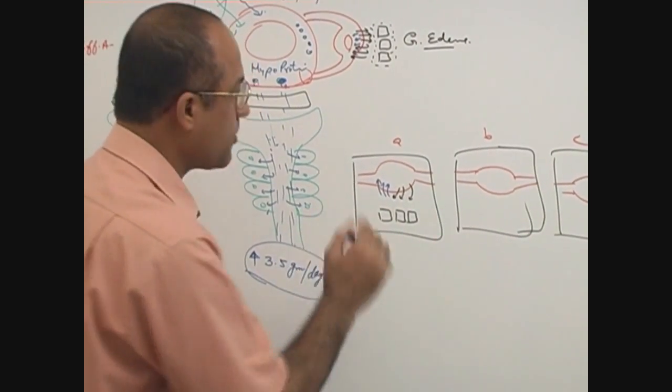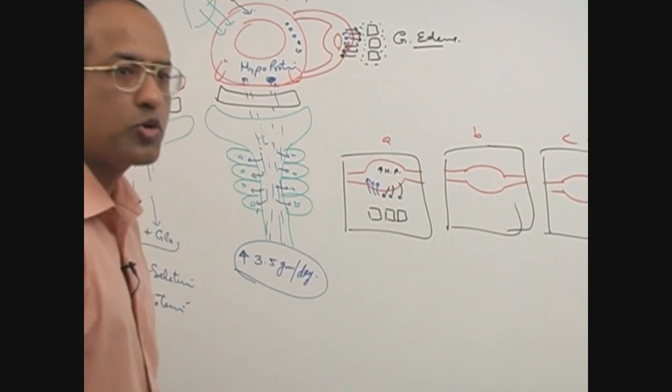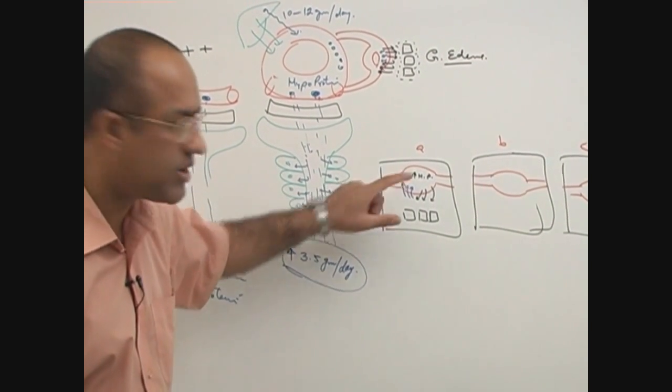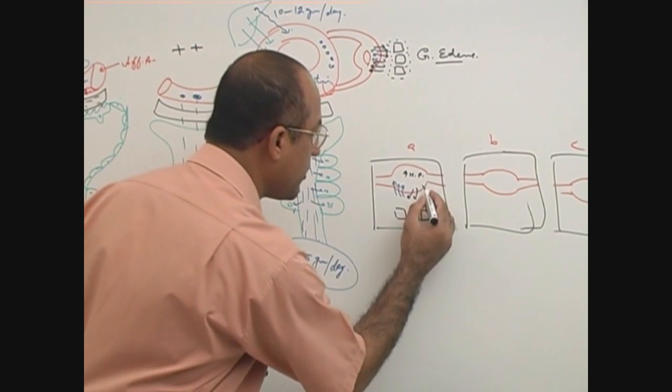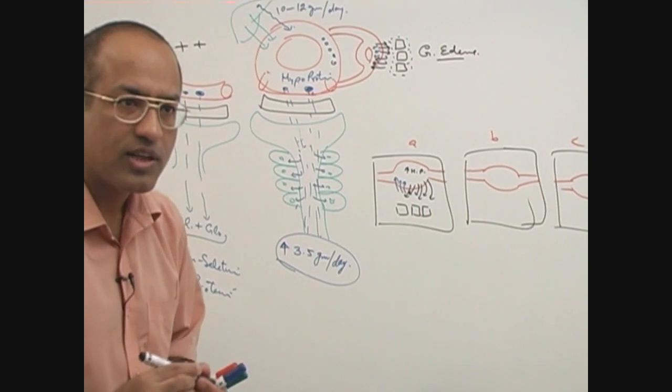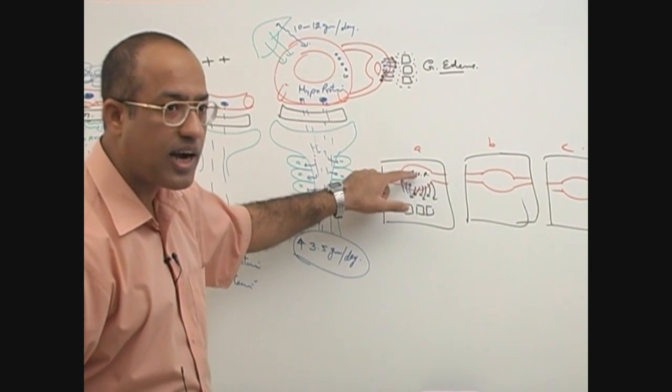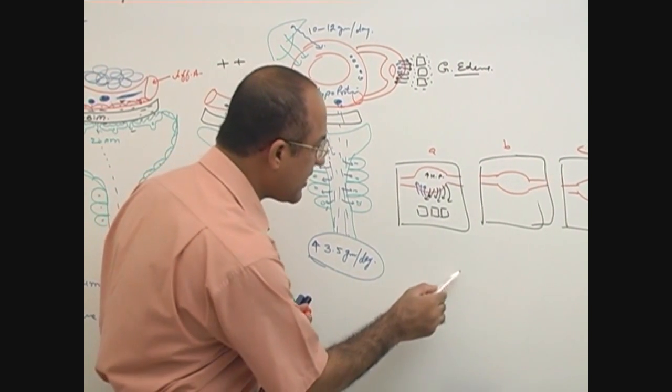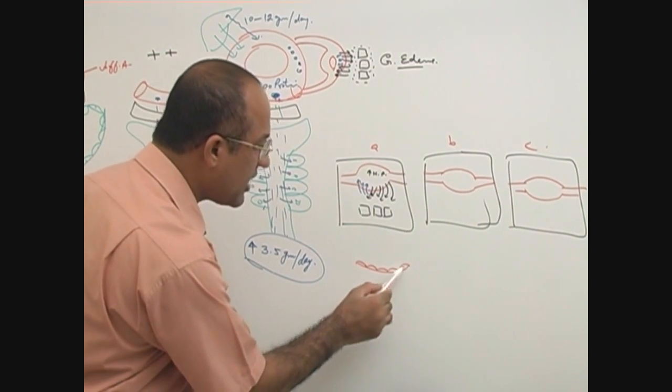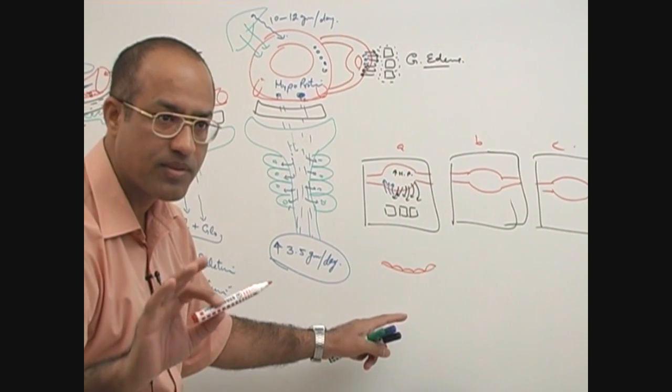In the first patient, patient A, there is increased hydrostatic pressure. Due to some reason, hydrostatic pressure becomes very very high. If pressure in the capillaries becomes very high, then leakage of the fluid will be too much. Now, fluid is extra filtered because of the high pressure but endothelial cells have normal permeability. Only the pressure dynamics are changed. Is that right?